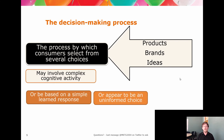Think about times you've agonized over a really small purchase — going up and down the confectionery aisle, weighing pros and cons. That's complex cognitive activity. Or it could be a simple learned response: you walk into the store, you know precisely what you want because your brand is there, it's Friday night, you pick up the product you always buy. That's a learned response.